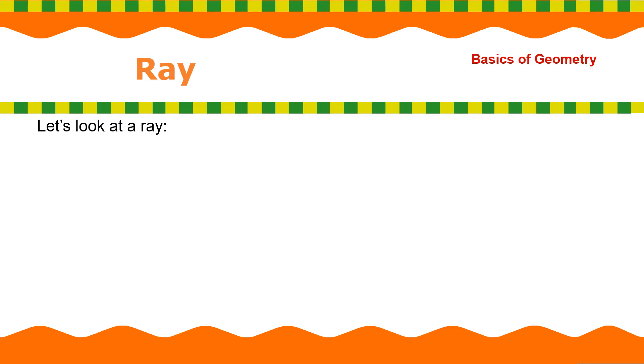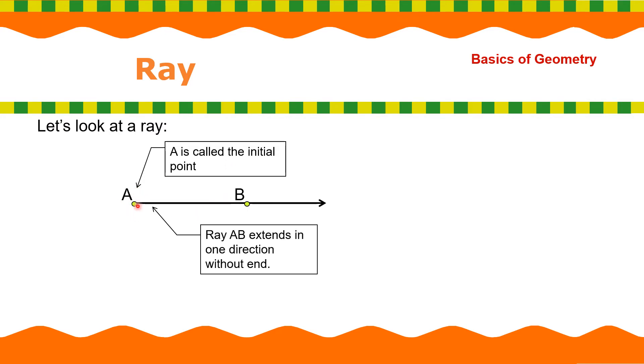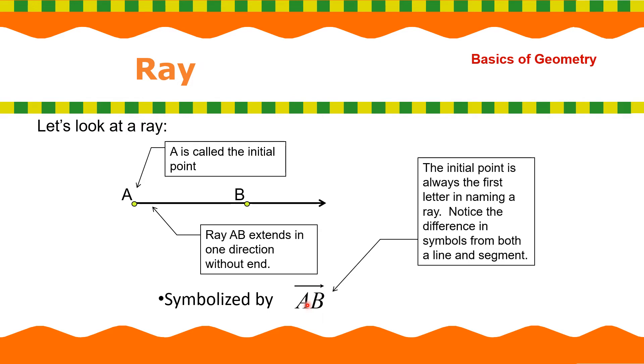Next, we have ray. Let's look at a ray. Okay. We have ray AB. A is called the initial point. So, this is the initial point. And we call it ray AB and extends in one direction without end. Symbolically, it is written as this one, ray AB. The initial point is always the first letter in naming a ray. So, notice difference in symbols from both a line and a line segment. So, pag line, dalawang arrowhead. Pag segment, walang arrowhead. Pag ray, meron siyang arrowhead in one direction.